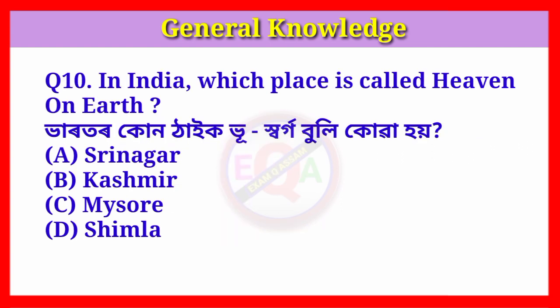Question number seven: Which place is called heaven on earth? Answer: Option B, Kashmir.